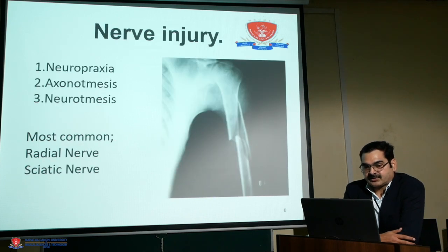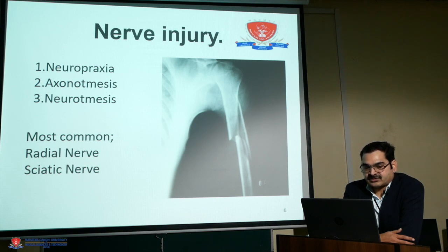Nerve injury could be neuropraxia — a physiological interruption of nerve function because of entrapment at the fracture site. Axonotmesis could occur because of contusion of the nerve, where some axonal injury is present. Neurotmesis refers to complete transection of the nerve.